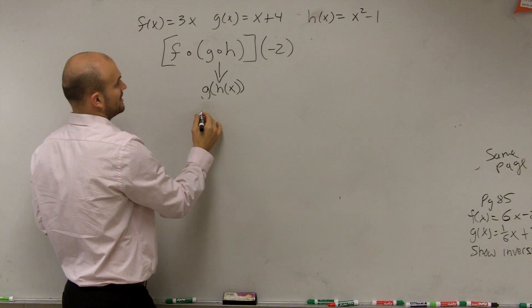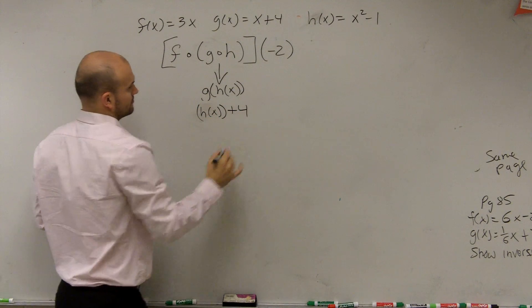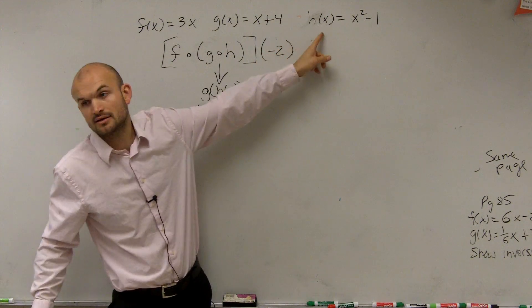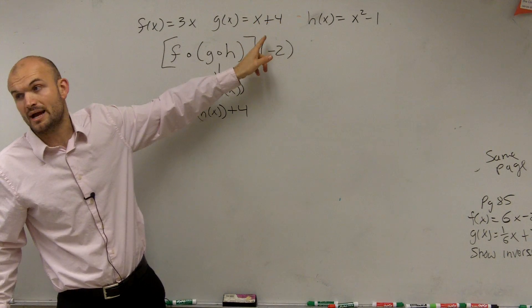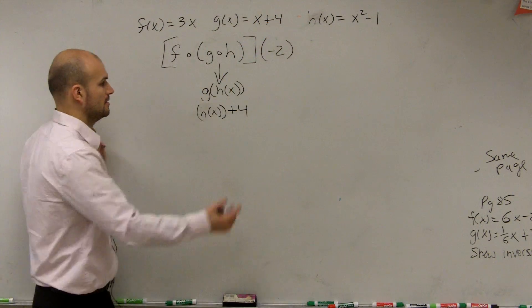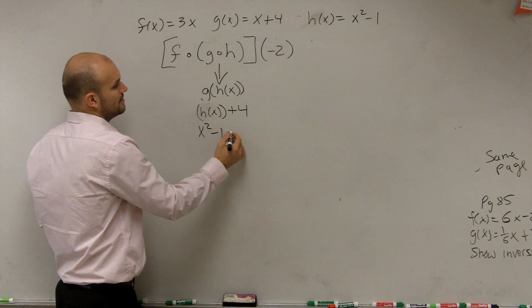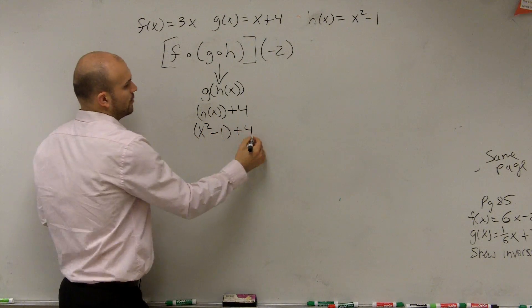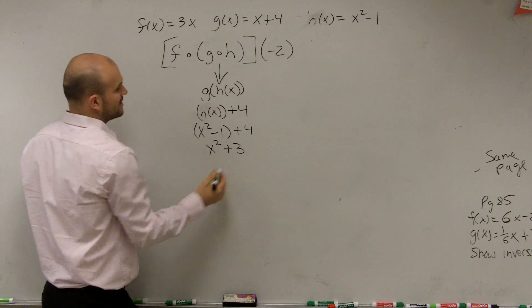So it's going to be h of x plus 4. Does everybody see how I took my h of x function and plugged it in for my x? So therefore, h of x is going to be x squared minus 1 plus 4. Combine those up, you get x squared plus 3.